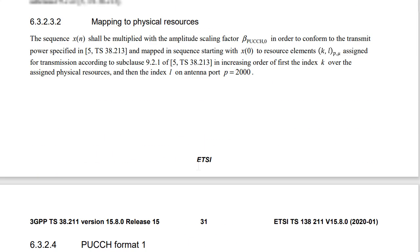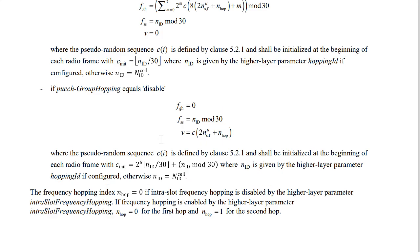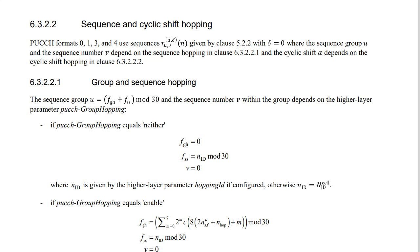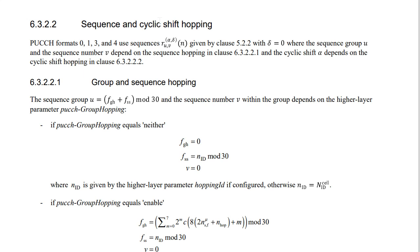I will get into the specification. So as you can see, this is Format 1 sequence modulation. If you see here, r_uv of M is the one where we are going to generate the sequence. That is as per 6.3.2.2. So let me get to that 6.3.2.2 section. So this is where we have the 6.3.2.2 section.